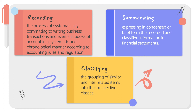We are also bound by accounting rules and regulations. Later on, we will discuss accounting concepts and principles, which serve as the rules for how we record accountable events. Next is classifying — the grouping of similar and interrelated items into their respective classes. In a business, there are classifications of accounts, and since many transactions happen even in just one month, we need to group similar and interrelated items so we can arrive at a more organized result for decision-making.